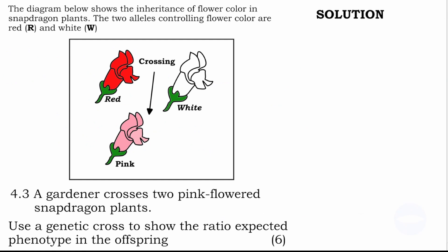The next question says: a gardener crosses two pink-flowered snapdragon plants. Use a genetic cross to show the ratio of expected phenotype in the offspring. Here, two pink flowers are crossed — not red and white, but two pink flowers. We know the phenotype is pink, and the genotype, because pink is produced by red and white, will be R and W. So the genotype is RW. This is the genotype that will be used when we solve our problem.